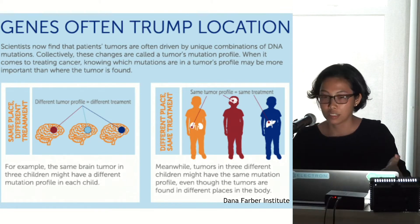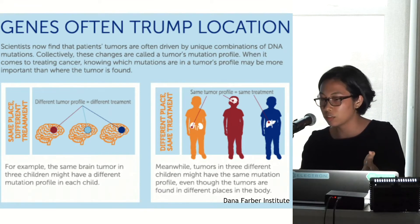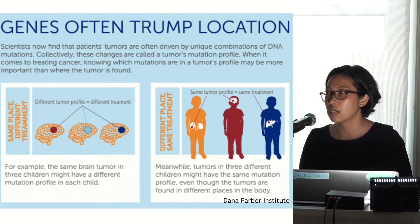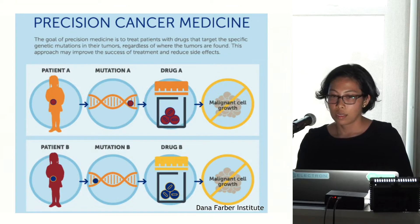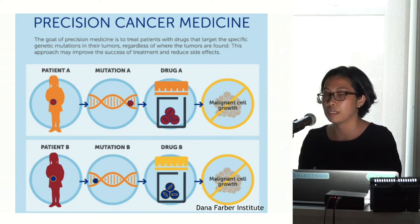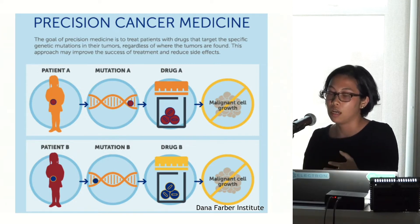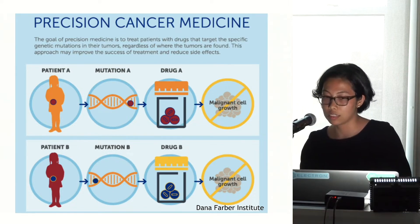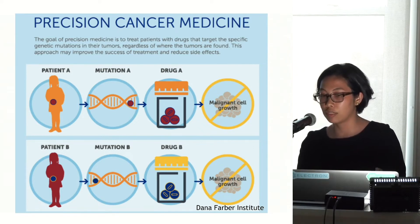For example, in this image here, we have three children with kidney tumors, brain tumors, and liver cancer. Even though the tumors are in different places, they actually have the same tumor profile. That's the basis of precision cancer medicine — treating a patient based on their individual genetic mutations rather than broad strokes or cruder methods of diagnosis. So you have patient A with mutation A and drug A, and patient B with mutation B and drug B.